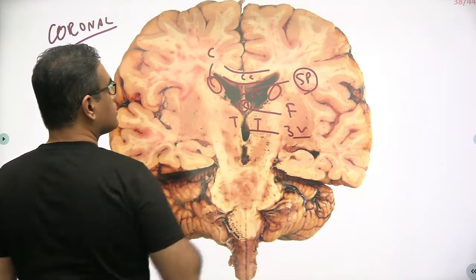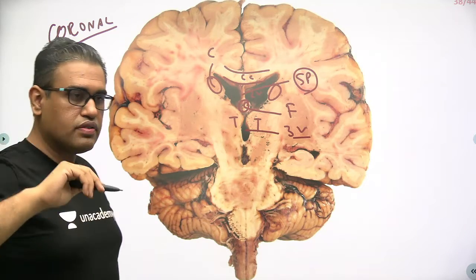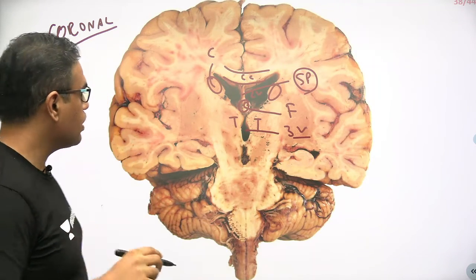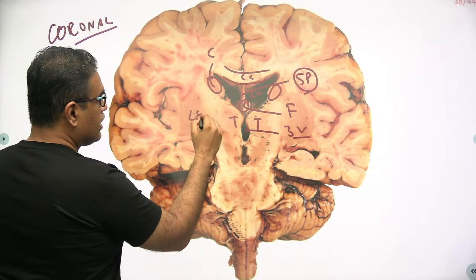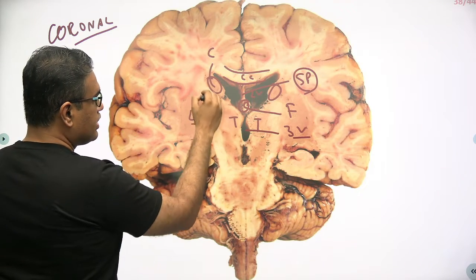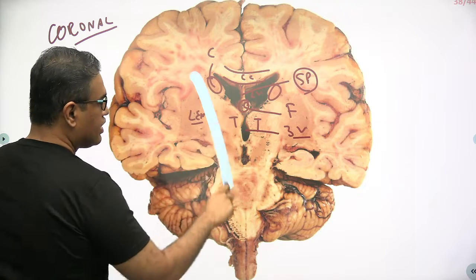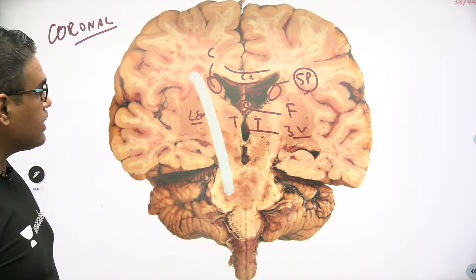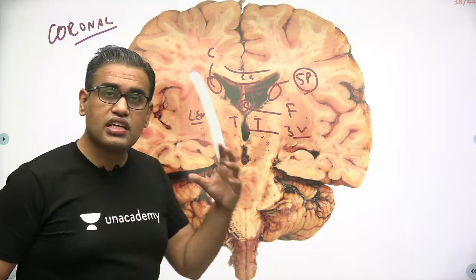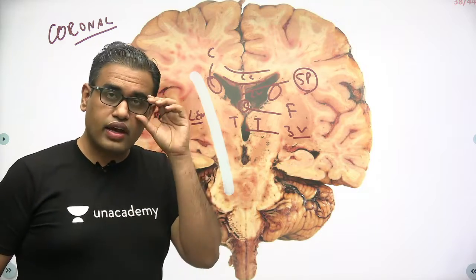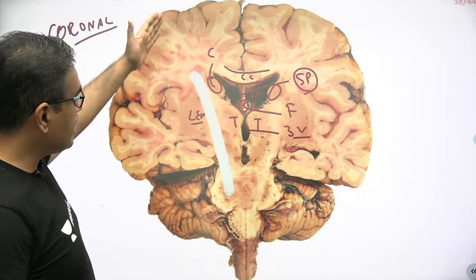This gray matter is the caudate nucleus. Just as we saw in the transverse section — caudate, thalamus — on the outside you have the lentiform nucleus. Running between them you can see white matter fibers: these are your internal capsule fibers.